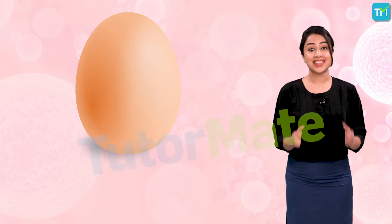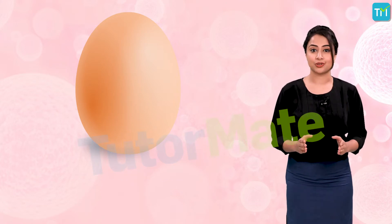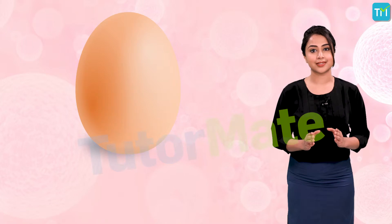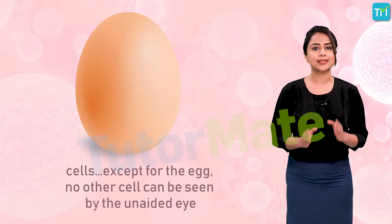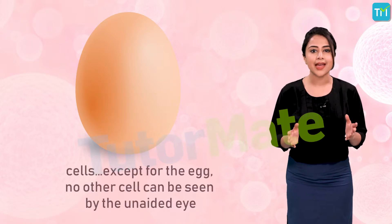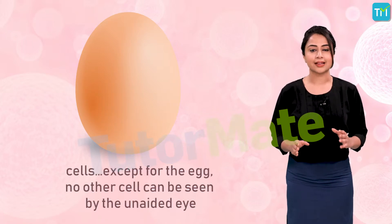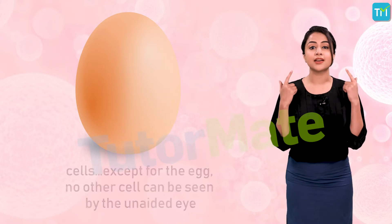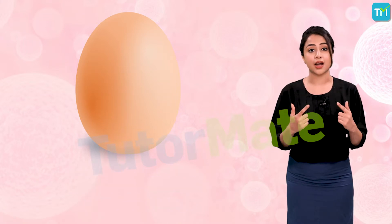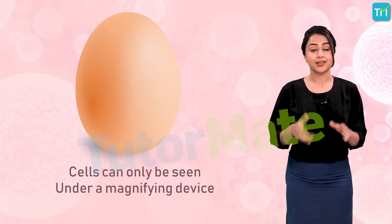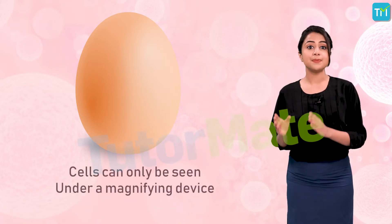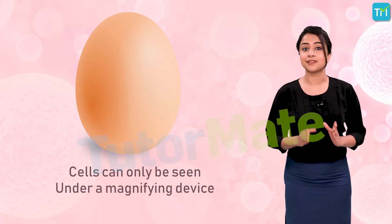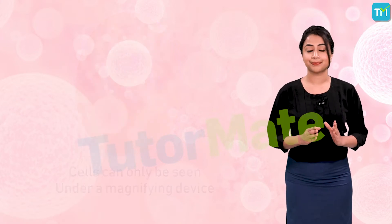This is an exception in the world of cells. Except for the egg, no other cell can be seen by the unaided eye. Cells can only be seen under a magnifying device.